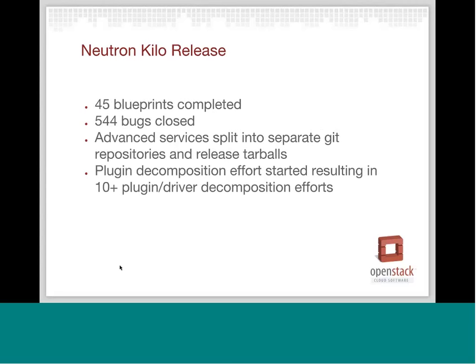One of the big things that we did in Kilo, which we've already seen the benefits of as far as velocity of development, is the advanced services split. We split out the advanced services — which include firewall, load balancer, and VPN — into separate Git repositories, and they actually release as their own tarball now. They still are aligned with the main Neutron release and still require the Neutron server to run, but it's possible in a future release that these advanced services, either some or all of them, will end up with their own API endpoints as well.